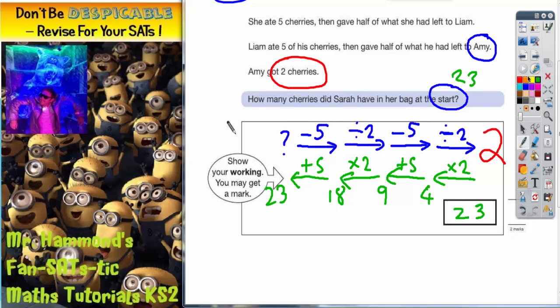It's a good idea at this point just to double check that that works. You can actually write on your little paragraph of writing at the start there. So if she started with twenty-three cherries and she ate five, she'd be on eighteen. If she then gave away half of what she had left to Liam, she'd be giving away nine. So Liam would actually be starting with nine cherries. Liam then ate five.